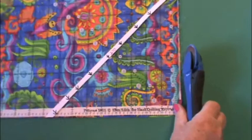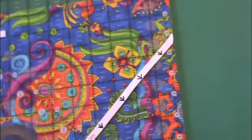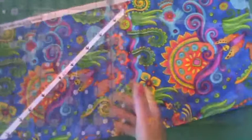So the first thing I want to do is fold the fabric, line up my ruler and trim off the rough edge. Okay, and now I have a nice clean edge to start with.